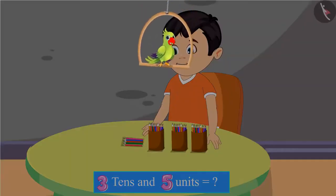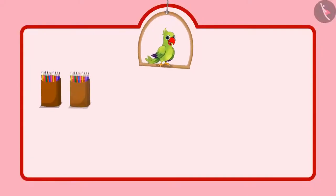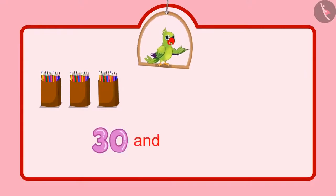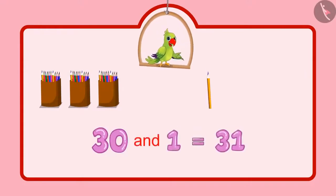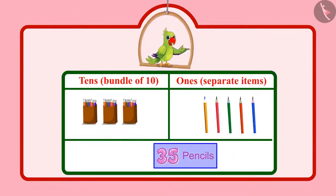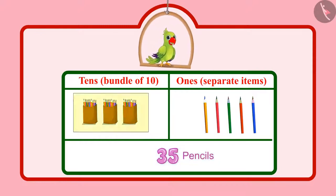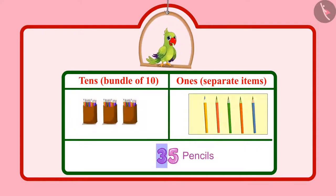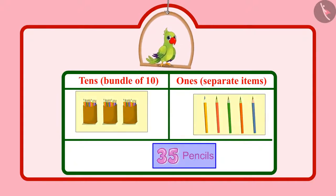Children, can you tell me how many pencils does Chotu have now? Come on, let us see. Chotu had 30 pencils, followed by 31, 32, 33, 34, 35. So, Chotu has 35 pencils in total. In 35 pencils, 3 means 3 tens and 5 means 5 units, which means total 35 pencils.